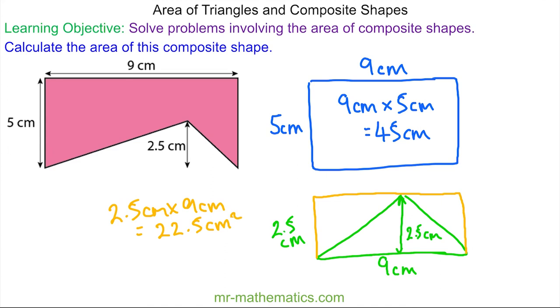We know the green triangle is half of this, so we'll divide it by 2. So the area of the triangle at the base is 11.25 centimeters squared.